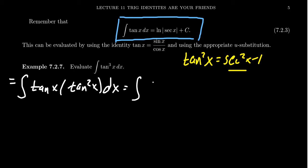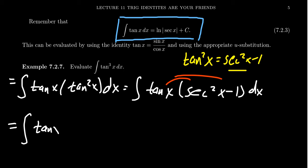If we do that, we get tangent x times secant squared x minus one dx. Now we're going to distribute the tangent across this difference. On the first one, you end up with tangent x secant squared x dx. And on the second one, you're going to end up with tangent x dx.